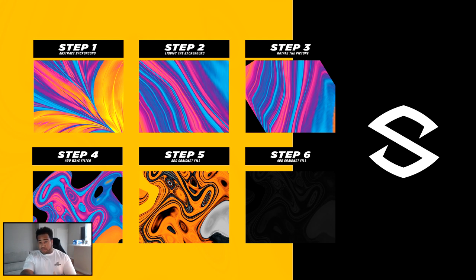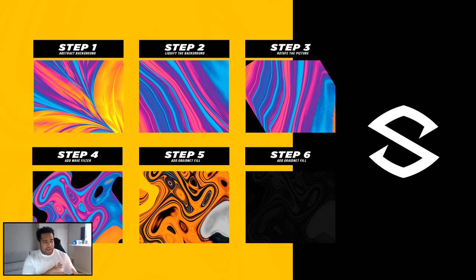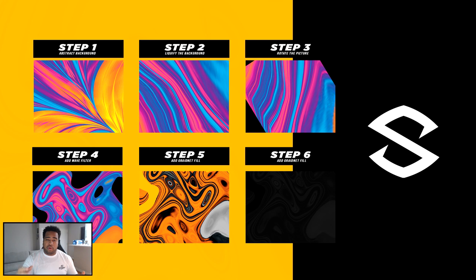So the steps are: step one will be having an abstract background, step two is the liquify of the actual background, then rotate the picture, then go ahead and add the wave effect — that gives you a really cool effect with facets and empty space in it — then add your gradient fills, and of course your text as the final step. It's super simple and super easy.